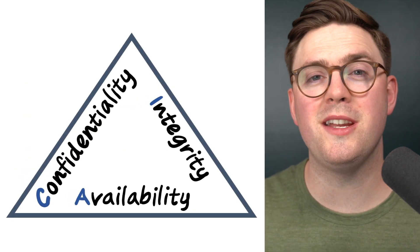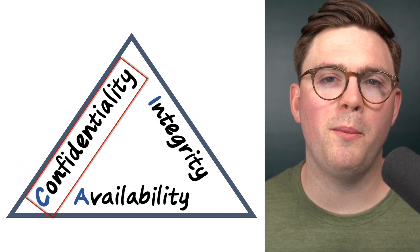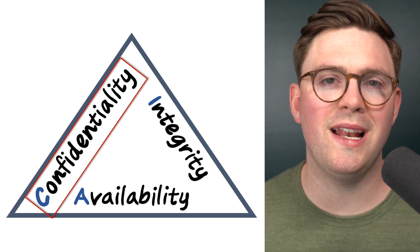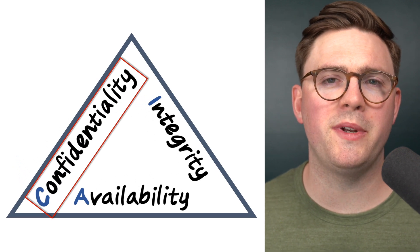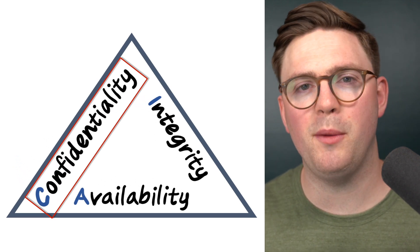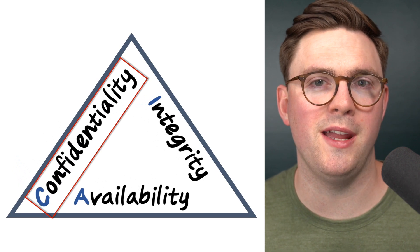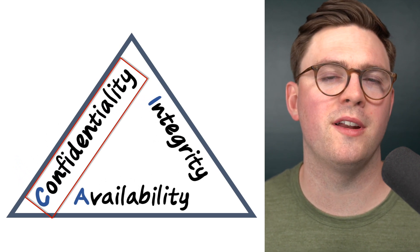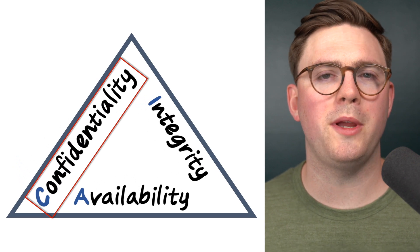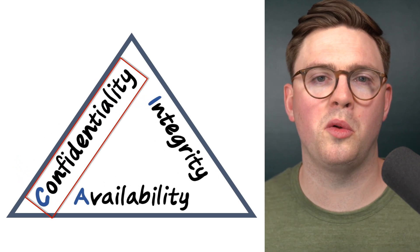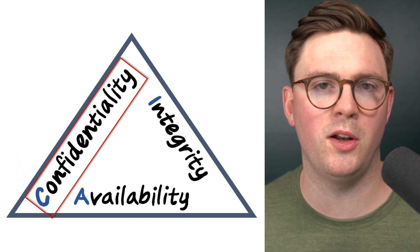The first principle is confidentiality — making sure that your company has the right level of secrecy across your data. You might want to protect things like financial data, personal data, or your company's IP, and you don't want unauthorized access to this data. You'll want to make sure it's protected whether it's at rest, in transit, or at its final destination.